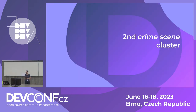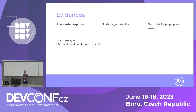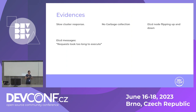The second crime scene is a scenario that happened with a cluster, and we had a few evidences. The most noticeable was that the cluster was getting slow — when you run kubectl commands you get a slow response, or when you open the console it's just not working quite well.